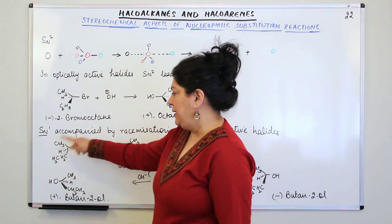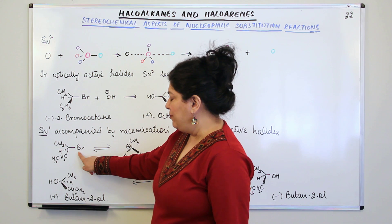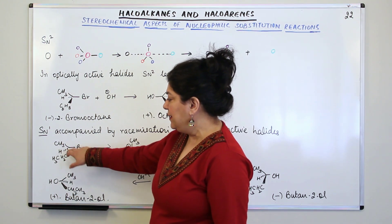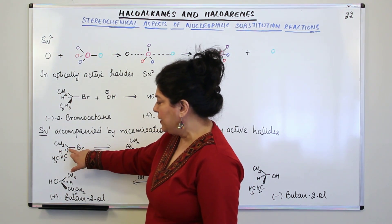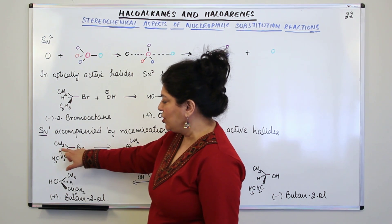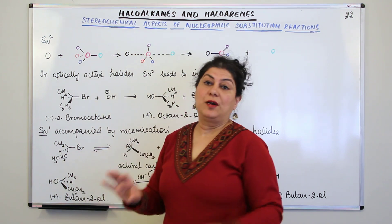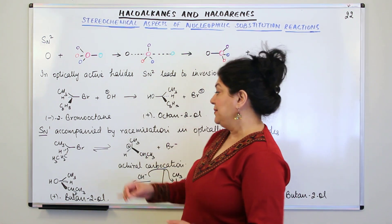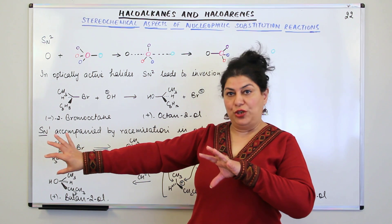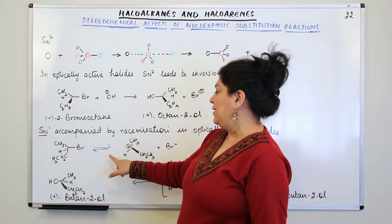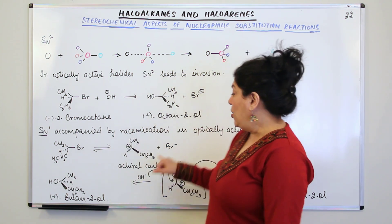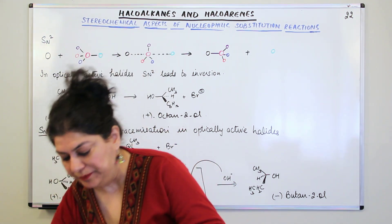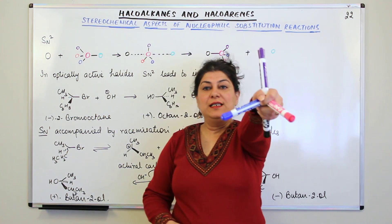Look at this reaction. You have 2-bromobutane — bromine is at the second carbon. To the second carbon you have bromine, hydrogen, an ethyl group, and a methyl group, so the second carbon is the chiral carbon and it is optically active. In the first step of SN1 mechanism, it undergoes change and loses the halogen first. The four bonds were forming a tetrahedral shape.